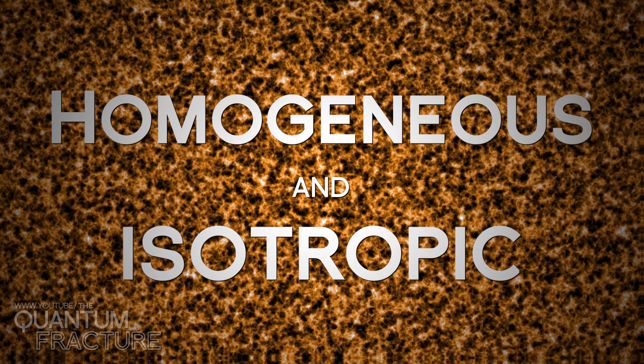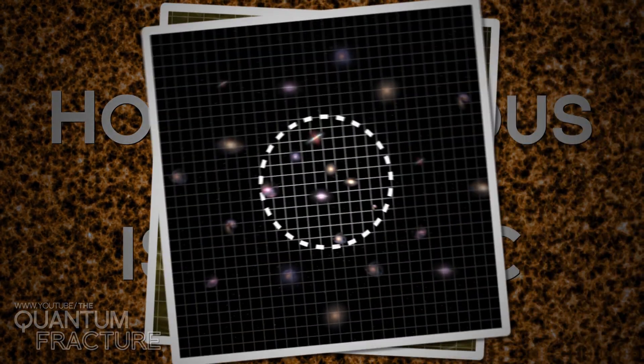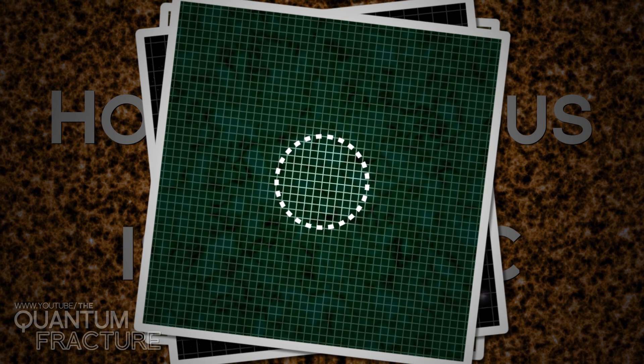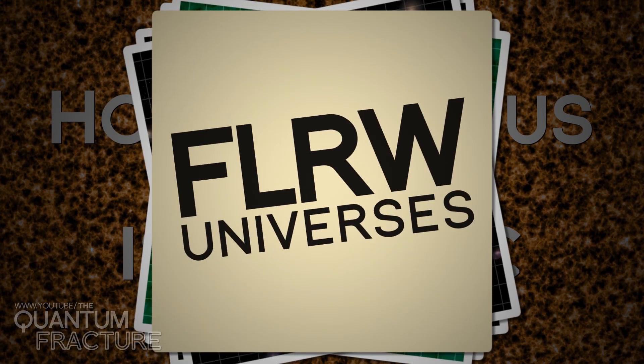The thing is, that this property, the fact that at a large scale, the universe looks the same everywhere, in other words, it's homogeneous and isotropic, is a blessing for physicists, because there's only one family of theoretical universes that meets these criteria. Friedman, Lemaitre, Robertson, Walker universes.